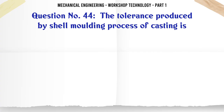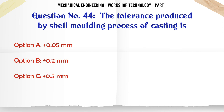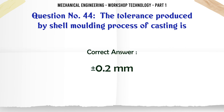The tolerance produced by the shell molding process of casting is: A. 0.05 mm. B. 0.2 mm. C. 0.5 mm. D. 1 mm. The correct answer is: 0.2 mm.